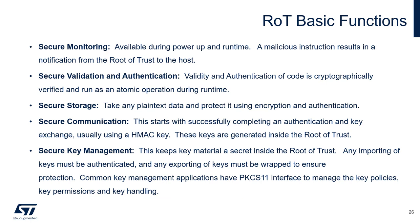What are some of the basic functions of a root of trust? A root of trust can provide secure monitoring, which is available during power-up and runtime — a malicious instruction results in a notification from the root of trust to the host. Secure validation and authentication: validity and authentication code is cryptographically verified and run as an atomic operation during runtime. Secure storage takes any plain text data and protects it using encryption and authentication. Secure communication starts with successfully completing an authentication and key exchange, usually using an HMAC key — these keys are generated inside the root of trust.